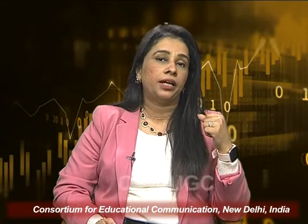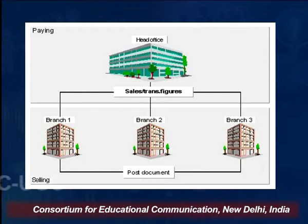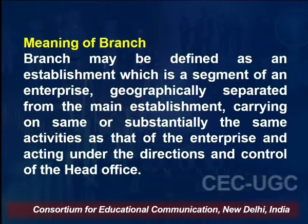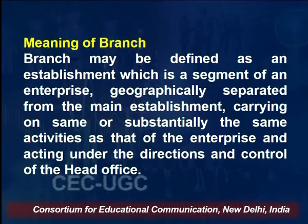The head office is the place that controls all other branches. The head office supplies goods to the branches, and these branches sell those goods to consumers. The amount received from customers is remitted to the head office on a daily basis. A branch may be defined as an establishment which is a segment of an enterprise, geographically separated from the main establishment, carrying on the same or substantially the same activity, and acting under the directions and control of the head office.